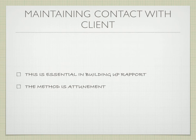Another important competency is contact with the client — that you are able to maintain contact. TA is a contact-oriented psychotherapy; it's essential for building up rapport. The major methodology you are aiming for is a sense of attunement. You have different types of attunement: developmental attunement, rhythmic attunement, and historical attunement. If you get the attunement right, by definition you will have a contact-oriented psychotherapy process.